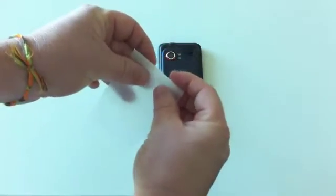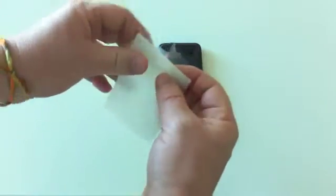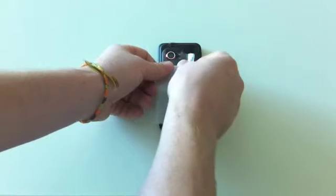Now you're ready to install the larger back protector. Simply peel the film off its backer by bending it down and rolling it up until the adhesive side is exposed.